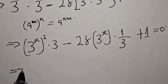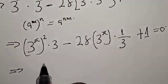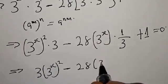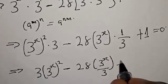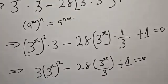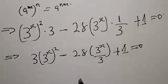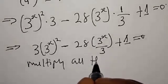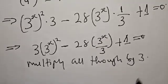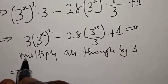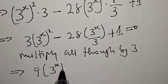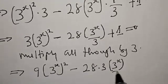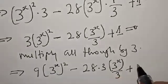This equals 0. This implies that we have t into t squared, minus 28 into t raised to the power x over 3, plus 1, equal to 0. Now what do we do next? We multiply all through by 3. This implies that we have 3 times t squared minus 28 multiplied by t.